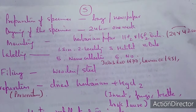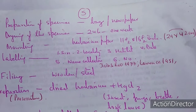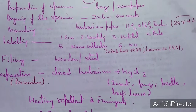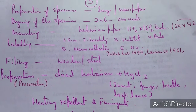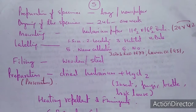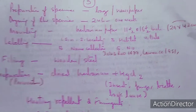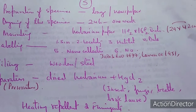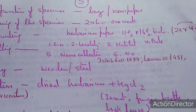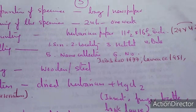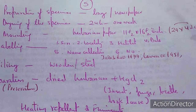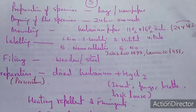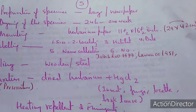Then the mounting on the herbarium sheet — usually 11.5 by 16.5 inches, or 29 by 42 centimeters. Then the labeling: a label is put on the right side of the herbarium sheet. The label includes serial number, locality, habitat, name of the collector, botanical name, and the herbarium number. Acronyms are also there. This process has been defined by Jain and Rao, Lawrence, etc.